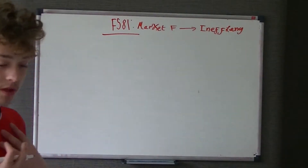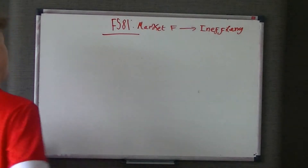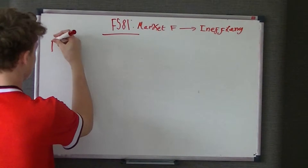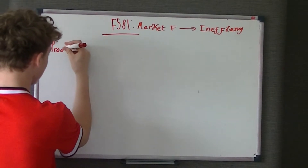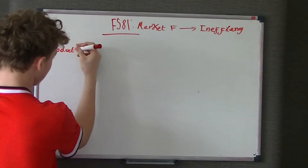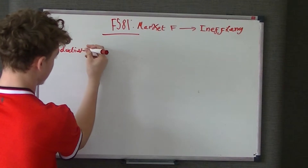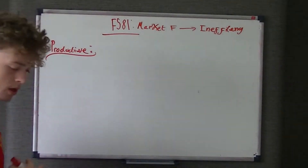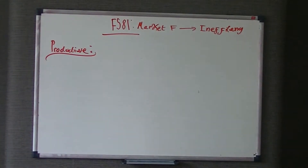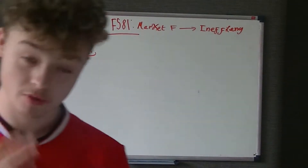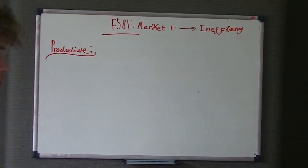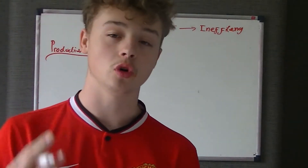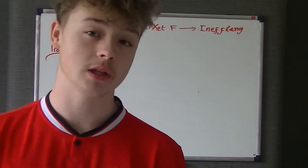The first one we talked about was the lowest unit cost part of the explanation, and that is something called productive efficiency. Economies are productively efficient when we're producing at the lowest unit cost, assuming all resources are fully utilized and employed.